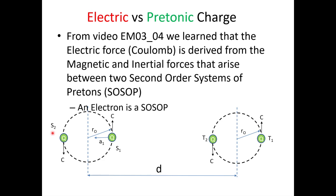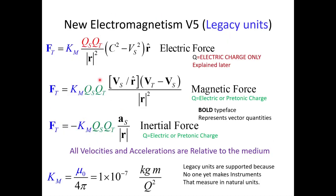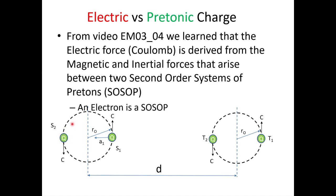Let's get into the clarification between electric versus pre-tonic charge. From the Electrogravity video EM0304, we learned that the electric force — the Coulomb force — is derived from the magnetic and inertial forces that arise between two second-order systems of pre-tons. In other words, an electron is a second-order system of pre-tons, and a proton is a second-order system of pre-tons. If you use the magnetic and inertial force models and compute the effects between source and target charges for all orientations, you will come up with a model that looks identical to electric charge.